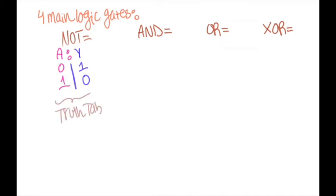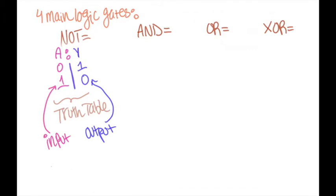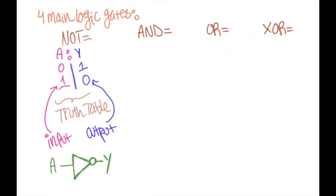What I just drew is called the truth table, which showcases our input A on the left and our output Y on the right. Our truth table basically shows all the possible inputs and outputs for a logic circuit. This is how we would represent a NOT gate in diagram form.